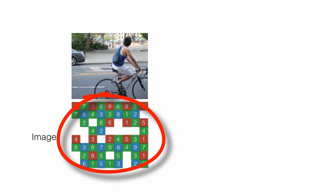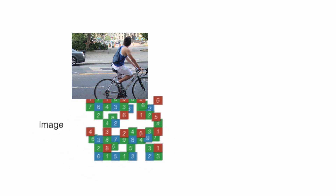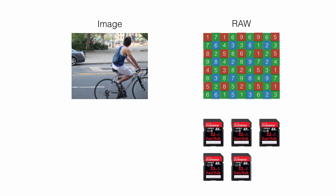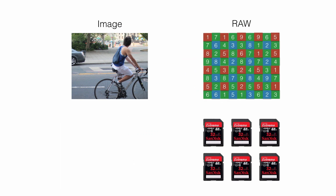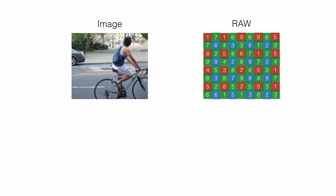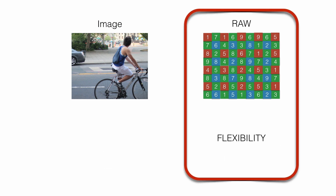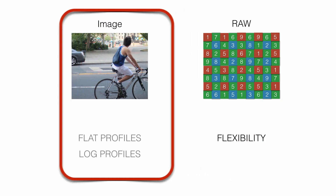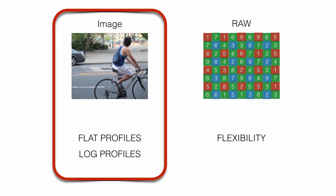When you process raw data to an image, you always end up losing information. On the other hand, raw requires way more storage and space than most processed files. Still, raw provides way more flexibility in post and grading than processed images. So in order to use processed images but introduce some of the flexibility of raw, manufacturers introduced flat profiles and log profiles — they exist to give images some of the flexibility of raw when it comes to color grading.